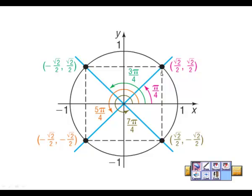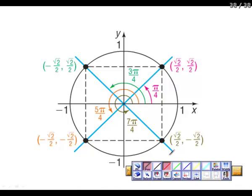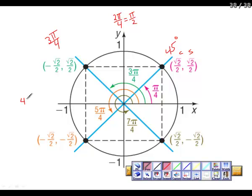Here we have π/4, which is the same as 45 degrees. We know that 45 degrees gives cosine and sine both equal to √2/2. At 90 degrees, this is 2π/4 or π/2. That makes the next point 3π/4. Continuing around, 4π/4 is just π. Then 5π/4 puts us in the third quadrant.